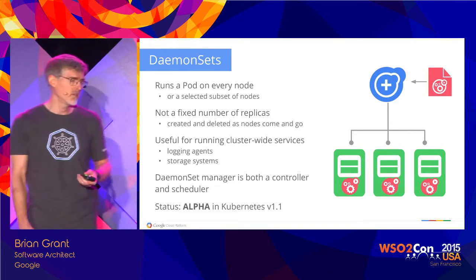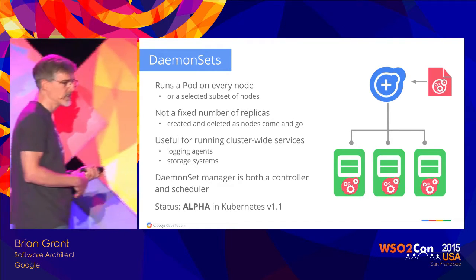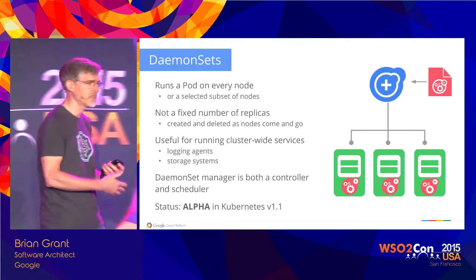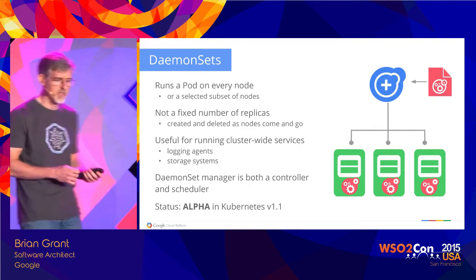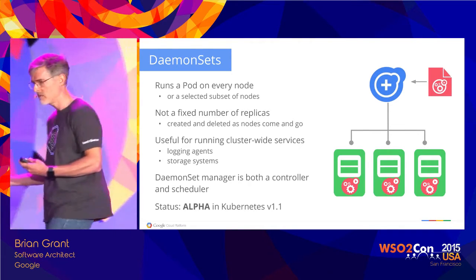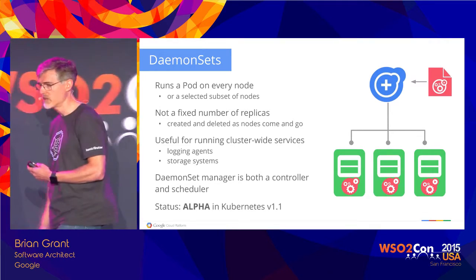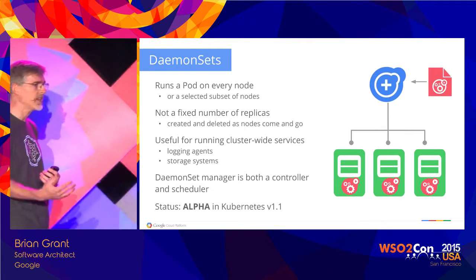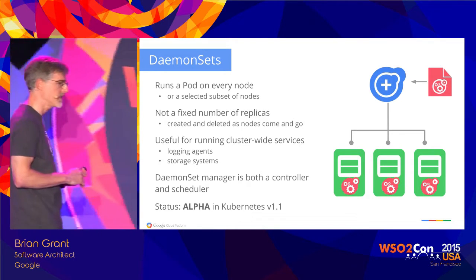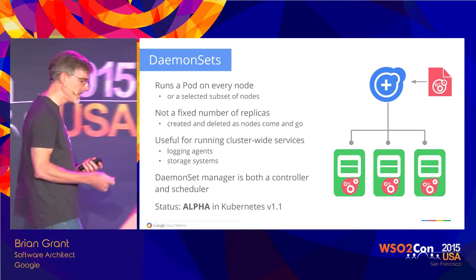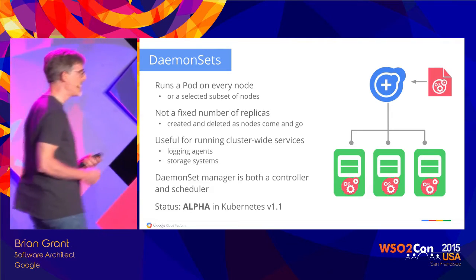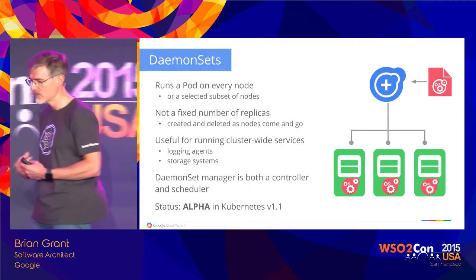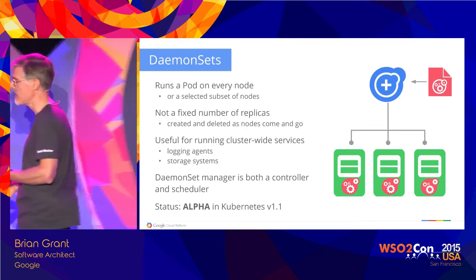Another controller added in 1.1 is the daemonSet. DaemonSet is similar to replication controller but for a different scenario — it allows you to run a pod on every node or a selected set of nodes specified by a label selector. It doesn't have a fixed number of replicas; instead, daemons are created and destroyed as nodes themselves come and go. This is typically used for creating cluster-wide services, like putting a logging agent or a storage system on every node. Interestingly, daemonSet is both a controller and a scheduler since it creates pods to run on specific nodes.